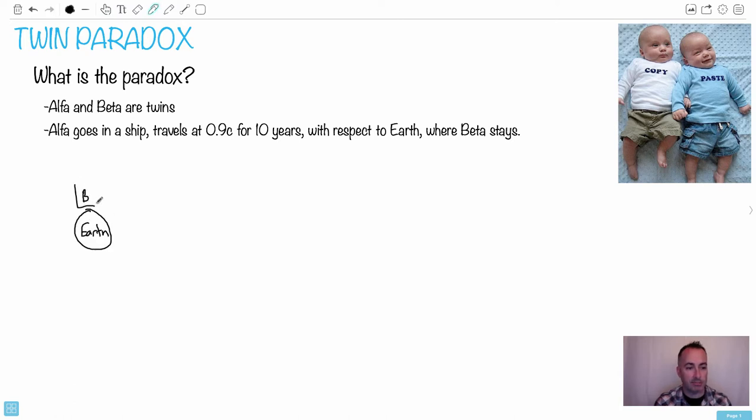Let's put Beta here, standing on Earth. And then we've got Alpha sitting in a rocket, and she goes away for 10 years and comes back again. So T equals 10 years. This is the situation.